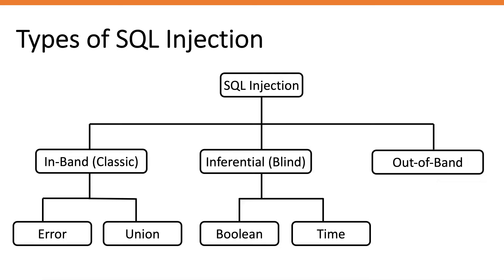The way you exploit blind SQL injections is more difficult than classic SQL injections. However, the impact of exploiting blind SQL injection is still just as bad as in-band SQL injection. The third and last category is out-of-band SQL injection. This occurs when the attacker is unable to use the same channel to launch the attack and gather results. It usually relies on the ability of an application to make a network connection — such as a DNS or HTTP request — to deliver data to an attacker.